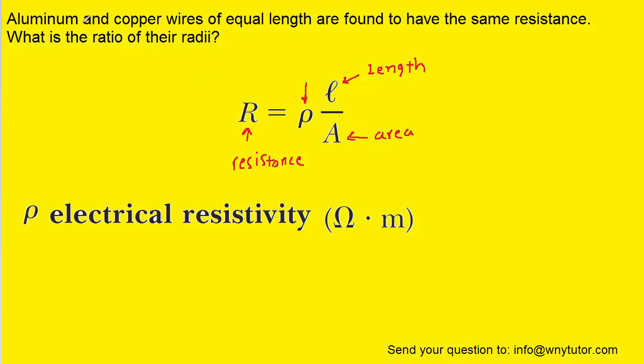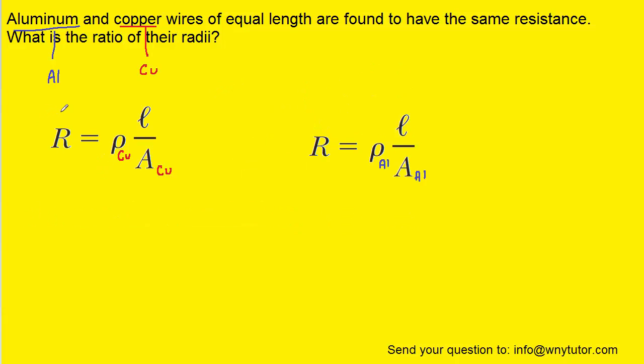Now we can apply this formula to both the aluminum and the copper wires. Using the symbol AL for aluminum and CU for copper, we have attached subscripts to the resistivity of copper as well as the cross-sectional area of copper, and then the same thing with the aluminum.